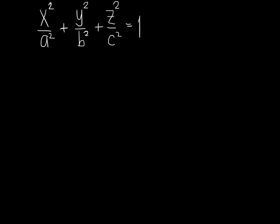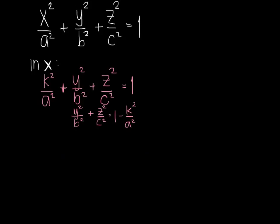Here's the next basic formula for a quadric surface. Looking at the traces in X first: when we plug in K for X, we get K squared over A squared plus Y squared over B squared plus Z squared over C squared equals 1. Moving that constant to the right-hand side, we see an ellipse of a particular radius. If the right-hand side is positive, we have an ellipse; if zero, then Y and Z both must be zero, giving a point; if negative, there is no solution — so three possibilities: ellipses, a point, or nothing.